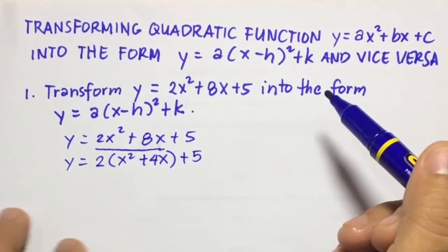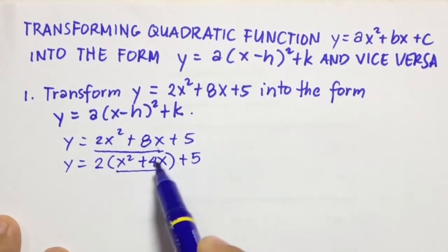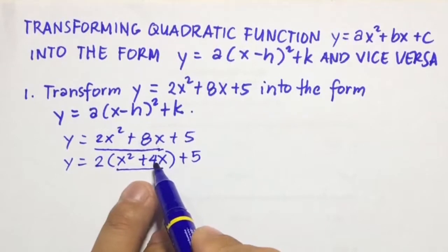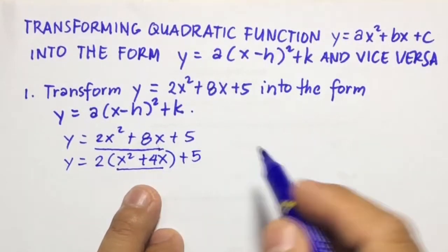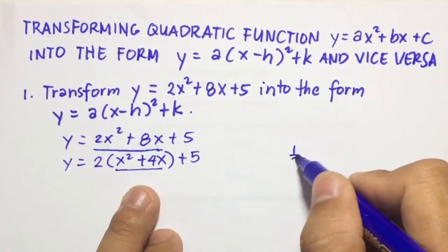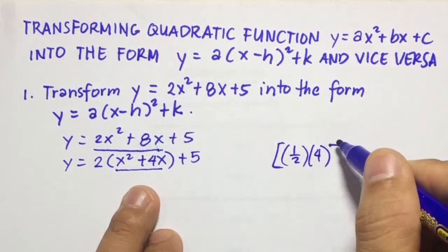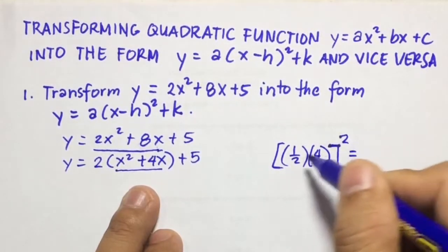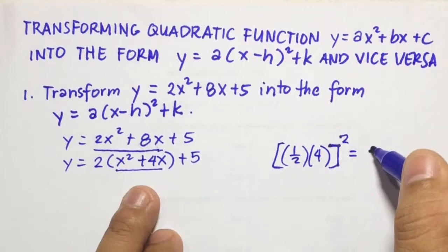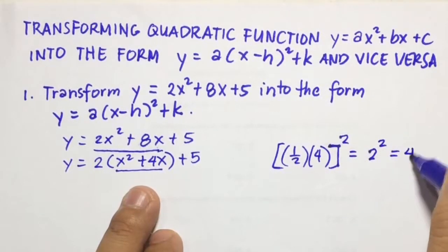Next thing to do is we're going to complete the squares of this binomial. So we're going to add one half of 4, then we're going to square the result. So one half of 4 is 2, so we're going to have 2 squared, and it will be equal to 4.